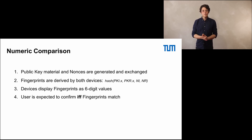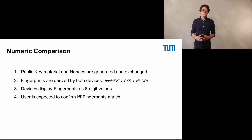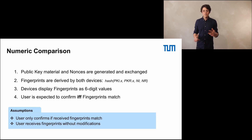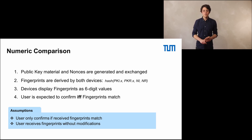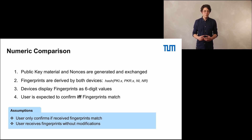Probably you have seen this before — you as a user are expected to confirm that these values are the same. By doing so you confirm that the hash values are the same and that most likely the material exchanged is also equivalent. What assumptions are made here? First, the material is confirmed because the user properly compares those values. Secondly, we assume that the material is exchanged and received unmodified. So those are the assumptions for numeric comparison — let's set them aside as we look at the second pairing method: passkey entry.